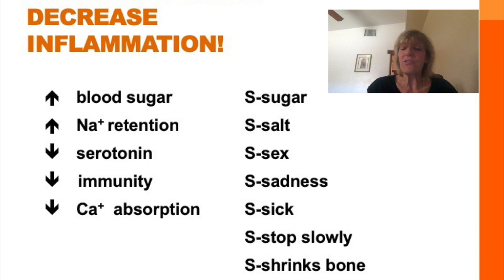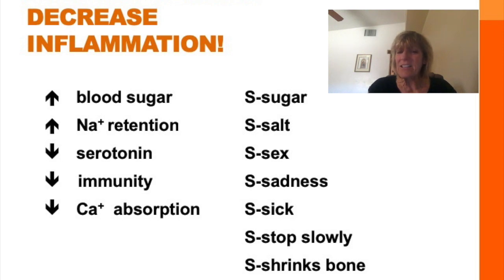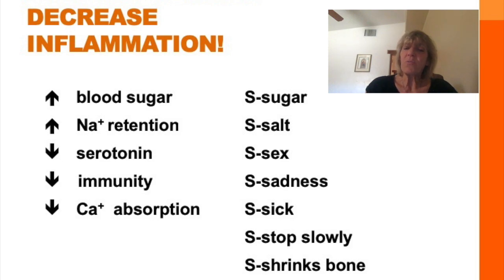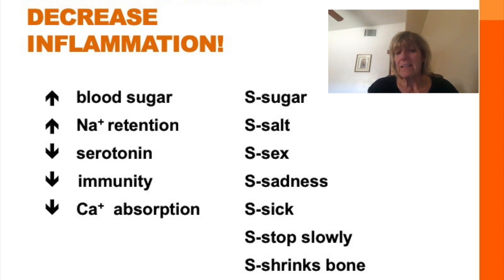The next S is for sick. Because cortisol suppresses immunity, patients on glucocorticoids can get sick more easily — that's also why people who are always stressed frequently get sick. When the immune system is suppressed, you may also see poor wound healing — wound healing will be prolonged. Inflammation begins wound healing, so if we suppress it, we may impair the body's ability to heal wounds.